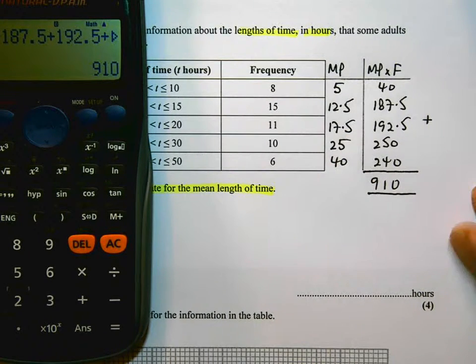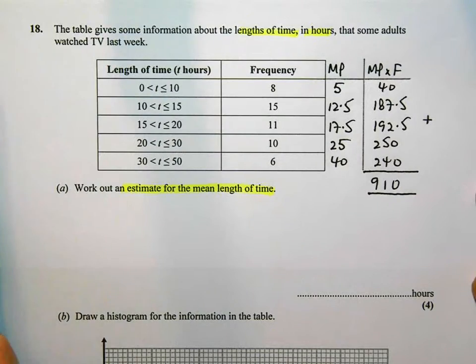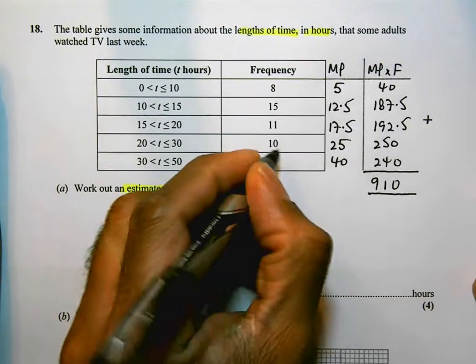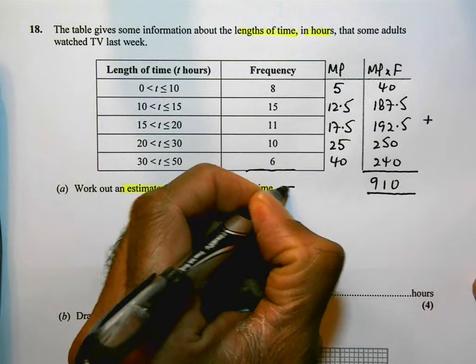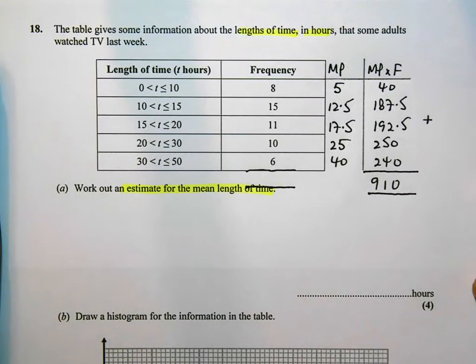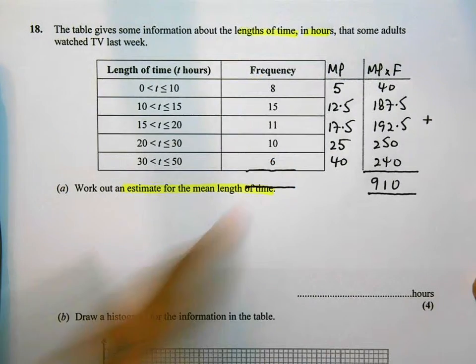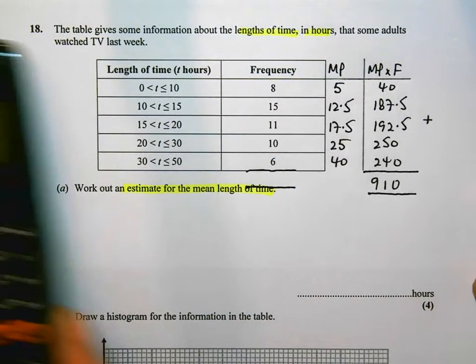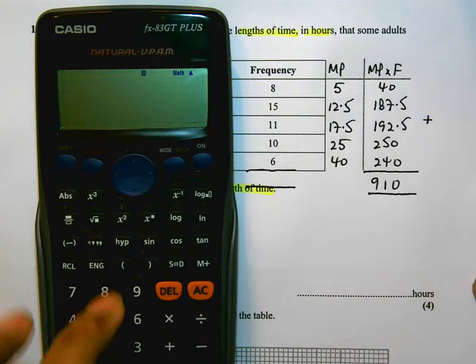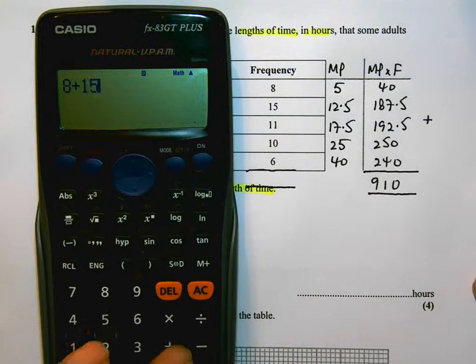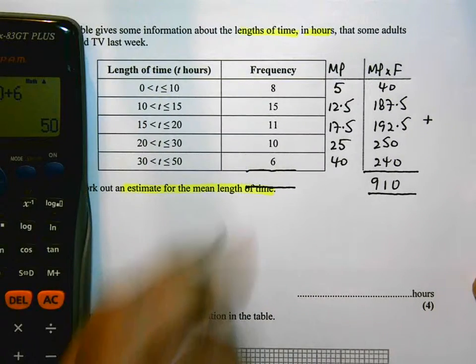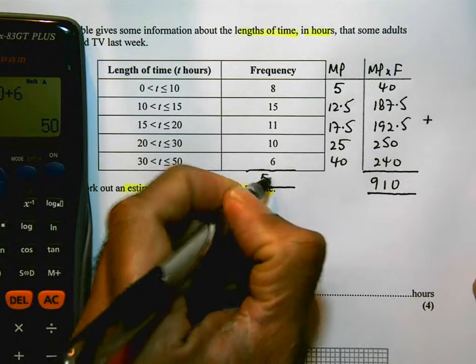The other value that I need to work out is the total frequency. How many adults did they survey altogether? They haven't said anything in the question to give us an idea, so I need to add up these values. So again, my calculator, I'm going to do 8 plus 15 plus 11 plus 10 plus 6, and that gives me exactly 50. Again, I'd be inclined to do that twice to make sure that I didn't make any errors whatsoever.